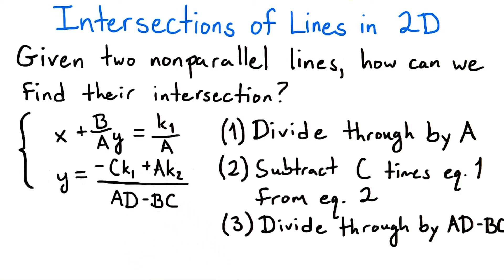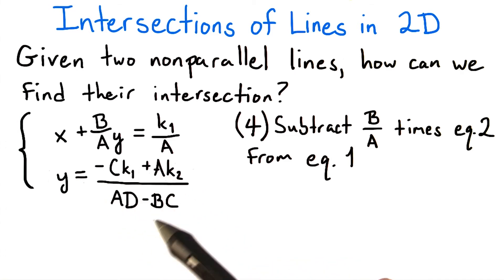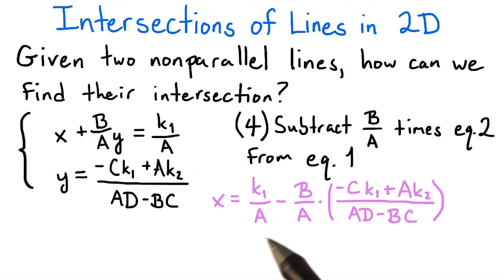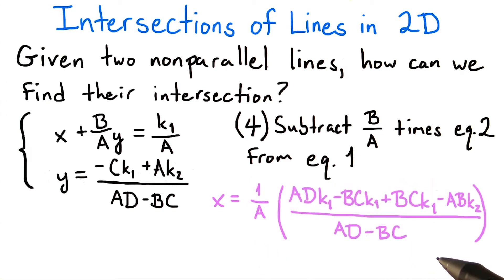Now, let's use the same subtraction process to go from this equation back to our first equation. If we subtract b over a times y from the left-hand side, then we can subtract b over a times all of this from the right-hand side. This gives us the messy looking equation. x equals k1 over a minus b over a times quantity minus ck1 plus ak2 over quantity ad minus bc. Let's pull out a factor of 1 over a to make it a bit cleaner. And then forming a common denominator for the k1 term allows us to consolidate the fraction inside the parentheses. This lets us kill the bc k1 terms and then cancel the factors of a to get this final form, x equals dk1 minus bk2 all over ad minus bc.